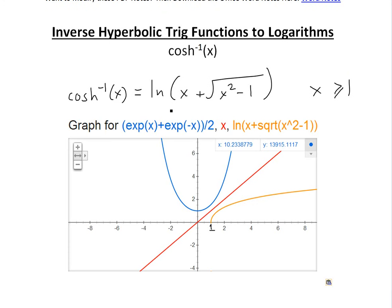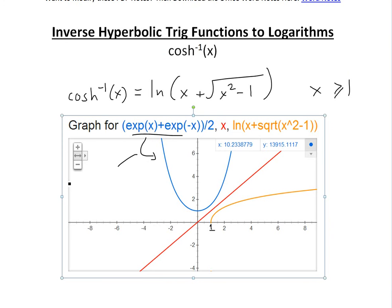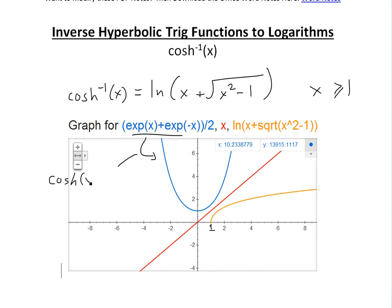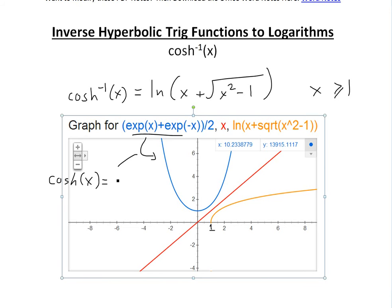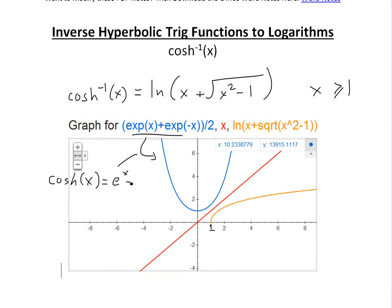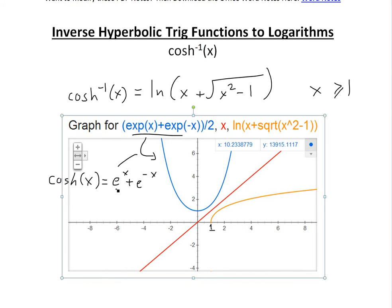The first step in showing that this equals a logarithm is graphing the function. This blue curve represents the hyperbolic cosine of x — that is, cosh(x) equals (e^x plus e^(-x)) divided by 2 — and I'm using the Google Graphing Calculator.